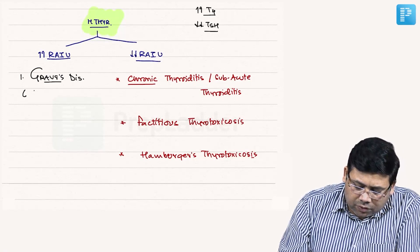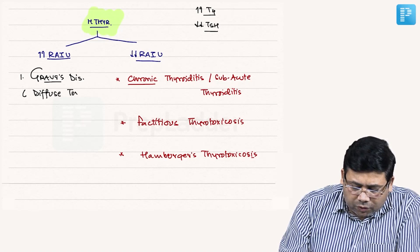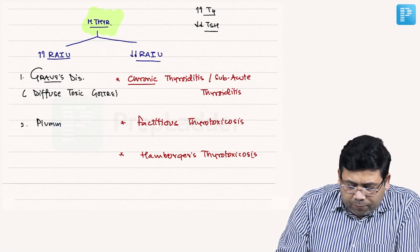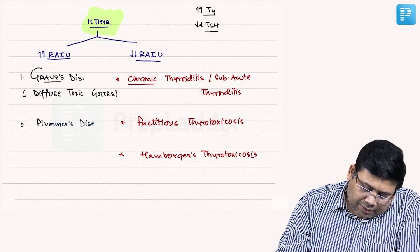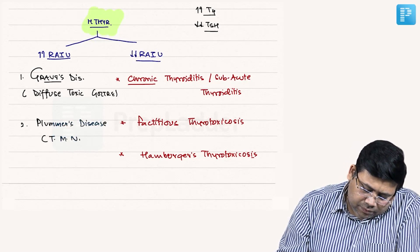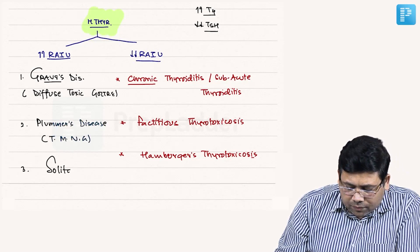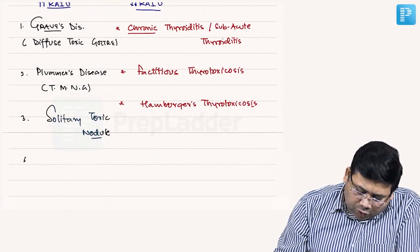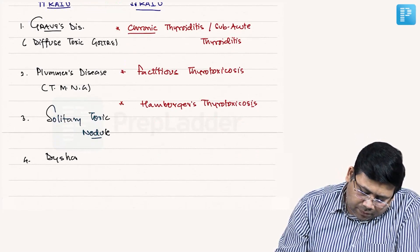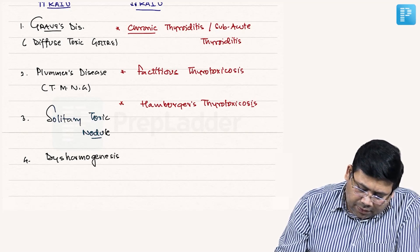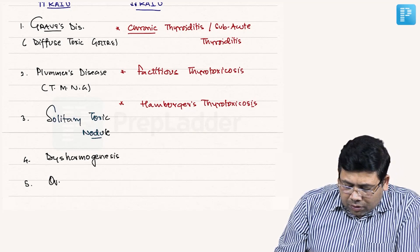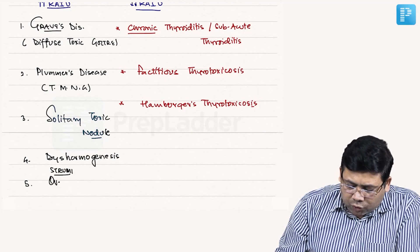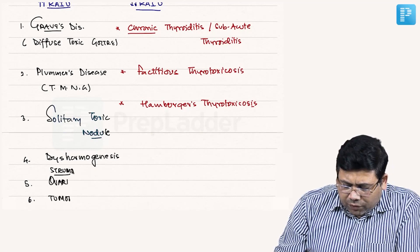Graves' disease is also called Diffuse Toxic Goiter. Other increased RAI uptake causes include Plummer's disease — that is Toxic Multinodular Goiter — and Solitary Toxic Nodule. Additionally, dishormogenesis can cause hyperthyroidism with increased RAI uptake, as can dermoid teratomas such as Struma Ovarii, or certain tumours, though those are rare.